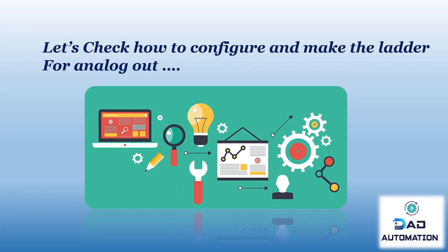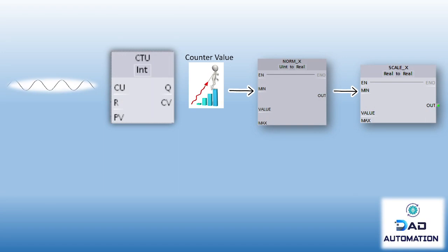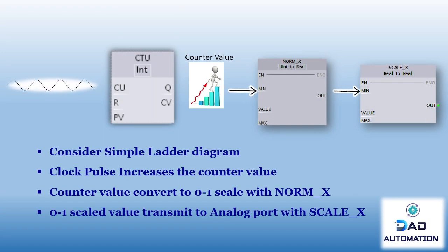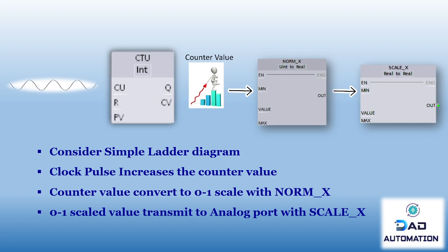Let's check how to configure and build the ladder for analog output data processing. Consider a simple ladder diagram: a clock pulse increases the counter value, the counter value is converted to a 0 to 1 scale using NORM_X, and the 0 to 1 scaled value is transmitted to the analog port using SCALE_X. Let's see how to program analog output in the TIA Portal environment and simulate it to see the output.